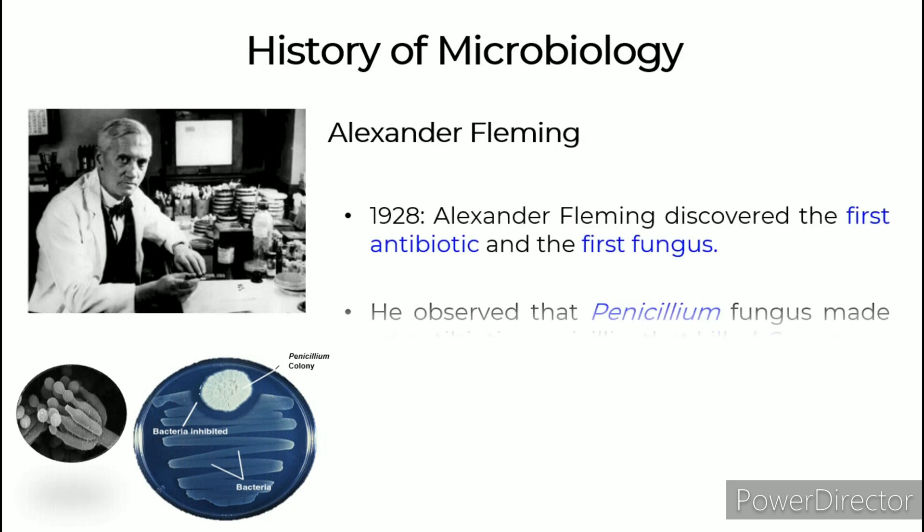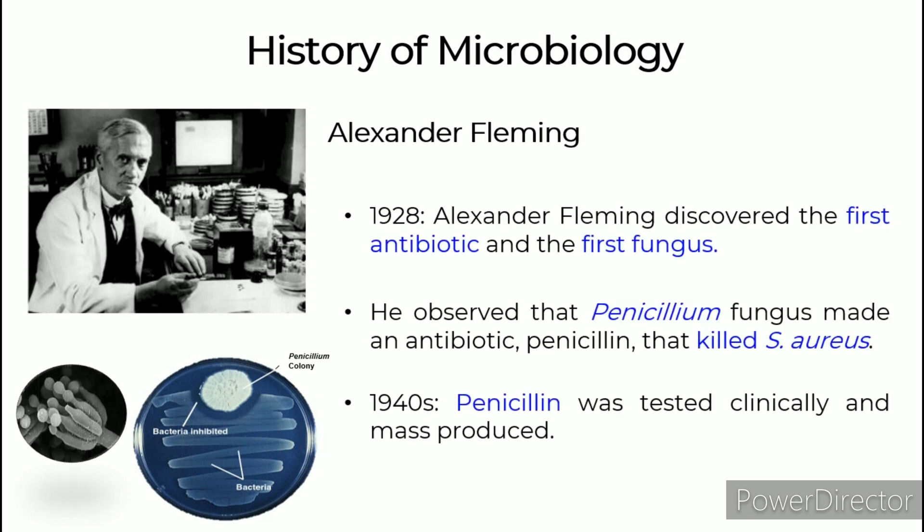Alexander Fleming, in 1928, discovered the first antibiotic. He observed that the Penicillium fungus produced an antibiotic — penicillin — that killed S. aureus. In the 1940s, penicillin was tested clinically and mass-produced.